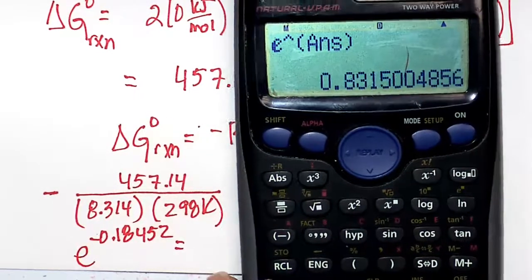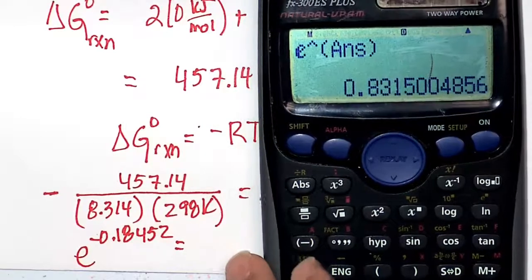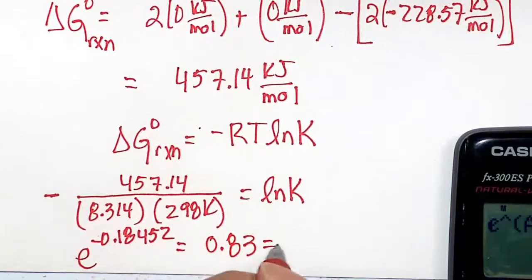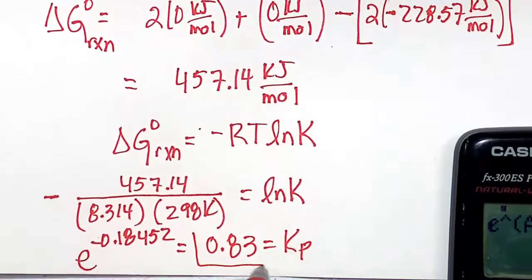And 0.83, which will be our Kp value, so 0.83, which is the Kp that we solve for this equation.